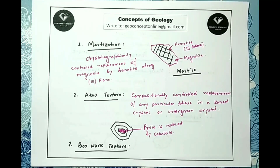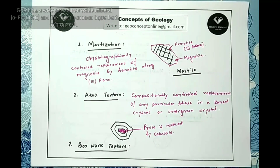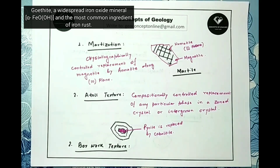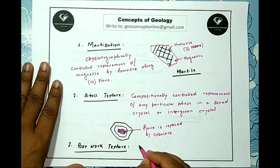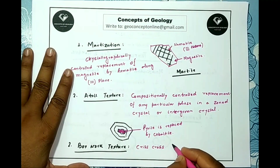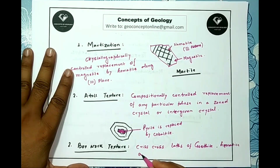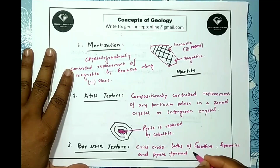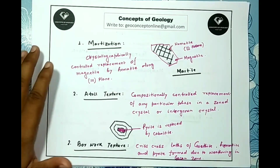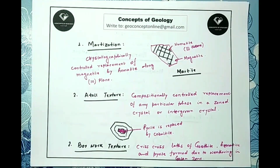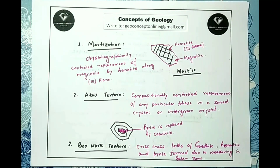The final example of replacement is the boxwork texture. This is composed of crisscross laths of goethite, hematite, and sometimes pyrite, formed due to weathering in the gosssan zone — which was discussed in the last class.